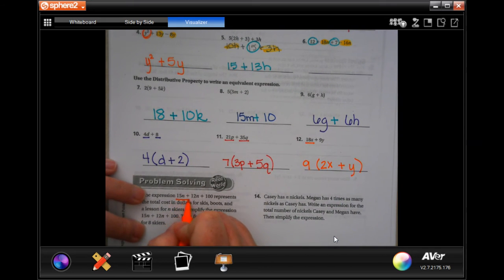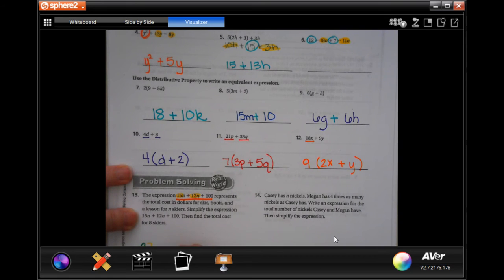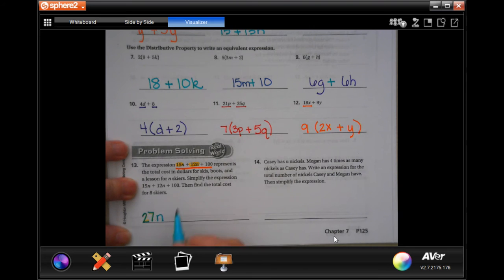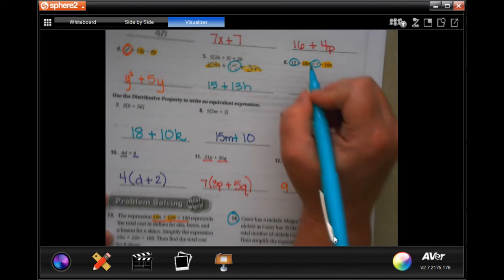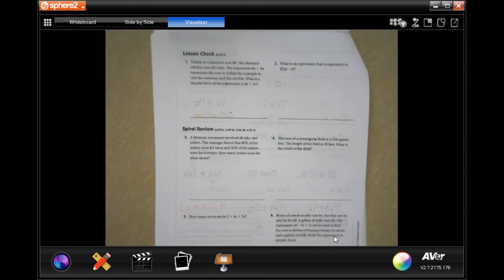So the expression 15n plus 12n plus 100 represents the total cost in dollars for skis, boots, and lessons for n skiers. So this is for the number of skiers. Simplify the expression 15n plus 12n plus 100. Well, if we go back through and we highlight our like terms, then we have 15 and 12 is 27. I should write that in color. And you guys can't see it, sorry. n plus that 100 because it didn't go anywhere. You guys do number 14. You guys do number 6. You totally can. You guys are going to go on to the back, and you're going to do the lesson check because you're brilliant. And I'm going to zoom back out a little bit, and we're going to go and do the spiral review.